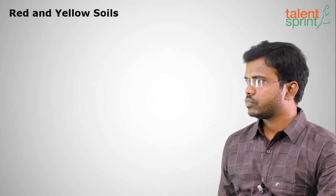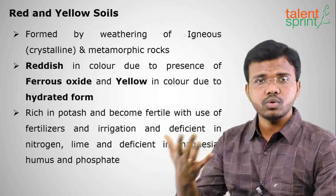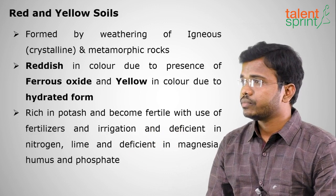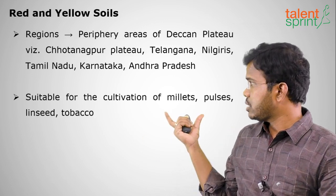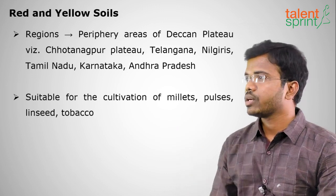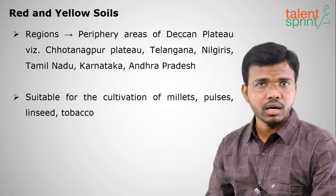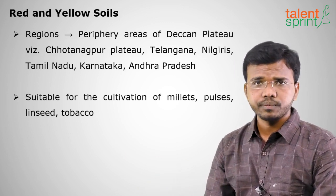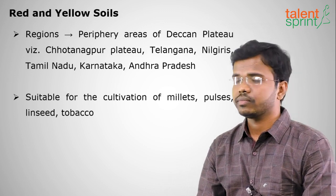Red and yellow soils are rich in potash and become more fertile with the use of fertilizers, excess plowing, and irrigation. They are deficient in nitrogen, lime, magnesium, and humus. They are present in the Chota Nagpur Plateau, Telangana, Tamil Nadu, Karnataka, and Andhra Pradesh. They are suitable for cultivation of millets such as jowar, bajra, and ragi, as well as pulses, linseed, and tobacco. We will continue in the next session with part two of Indian soils.